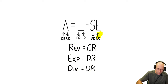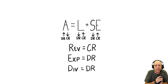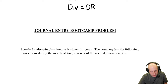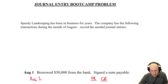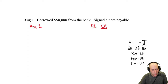Those are the rules — you should be familiar with them. If you're not, go back and watch that earlier video I've linked, because I really go through it in slow detail. This is meant for people who have an idea about journal entries but just need more practice. This problem is linked right below the video — you'll see a link to a PDF file of the problem and a few of my others. Speedy Landscaping has been in business for years and has the following transactions during the month of August. Record the needed journal entries.